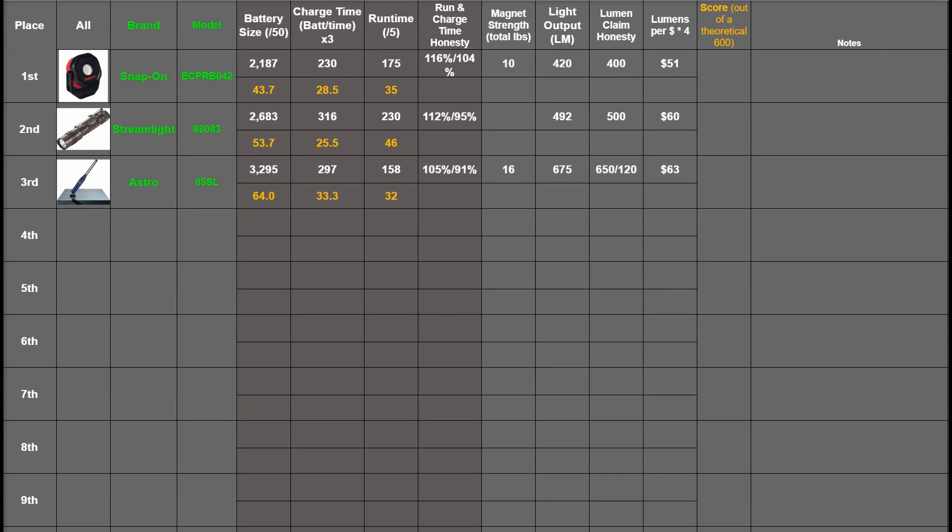Runtime and charge time is compared to what's advertised here in percentage. The Snap-on ran 16 percent longer than advertised and charged 4 percent quicker, that's an average of 110 percent or 110 points, then 104 and 98. All these performed at above or roughly at their advertised times so pretty impressed there. Then we got magnet strength. These pounds are turned into points here. The light output we measure will be turned into points.